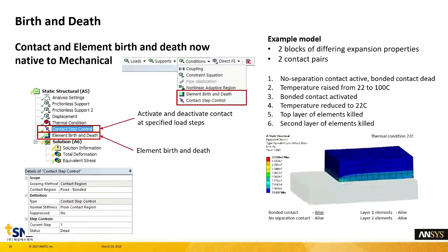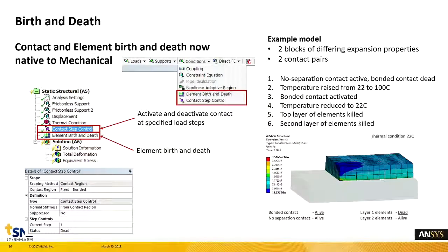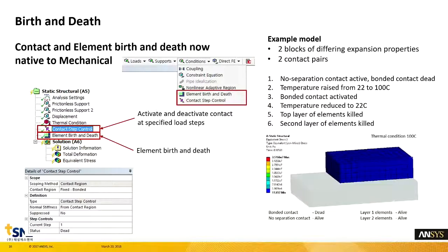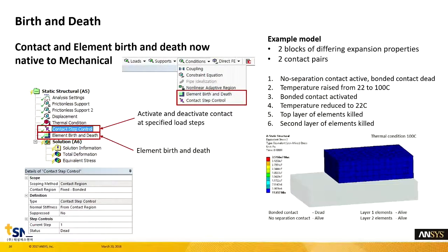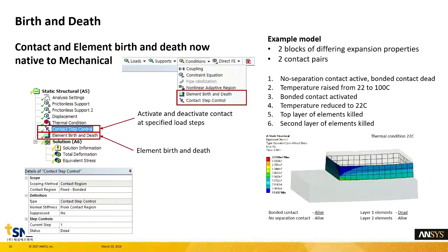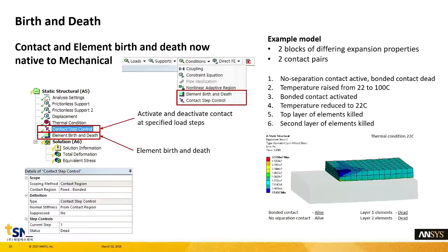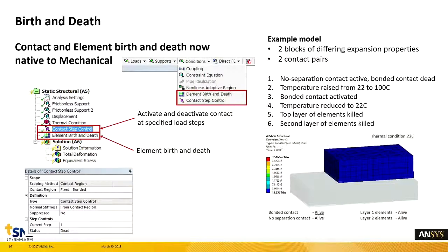다음은 Birth and Death 기능입니다. 여러 개의 다중 하중 스텝이 있을 경우, 요소를 생성시키거나 비활성화시키거나, Contact 조건에 대해서 활성화·비활성화 조건을 진행하시려면 이전 버전에서는 ACT를 설치해서 진행해야 했습니다. 이제는 ACT를 설치하지 않고도 바로 아이콘으로 들어와서 자유롭게 사용할 수 있게끔 업데이트되었습니다. Static Structure 아래 리스트에서 Contact Activate/Deactivate Control이나 Element Birth and Death 기능이 새롭게 추가되어 자유롭게 사용할 수 있습니다.